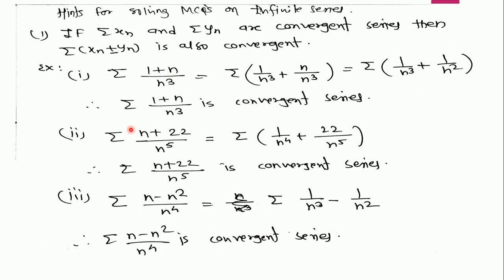See another example: if we have the series summation of (N + 22) / N⁵, then this again can be written as the sum of two separate series. Each part is a convergent series, therefore this is the sum of two convergent series, and therefore this is also a convergent series.